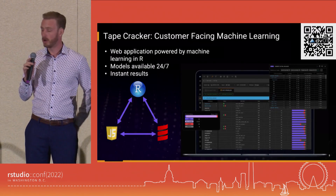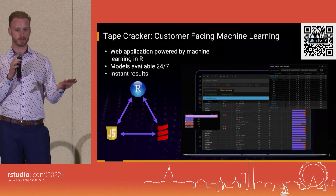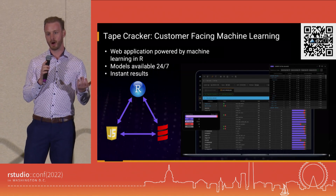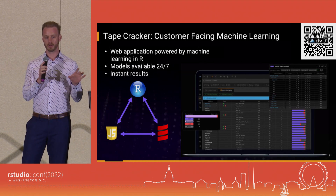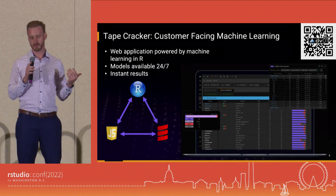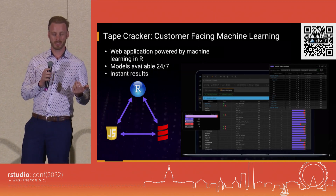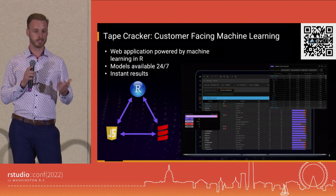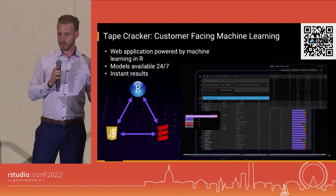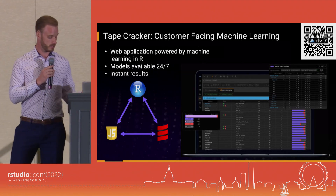I work on Tapecracker, which is a web application that has a few components. There's a JavaScript front end, a Scala back end, and then we have a machine learning microservice in R, which provides predictions used by the other two components. This application is used live by customers — they expect their results immediately, so there are very high requirements for availability and dependability. Our sales team demos this app live to prospective clients, so it has to work every time. If there's a failure, we could lose a prospective client.